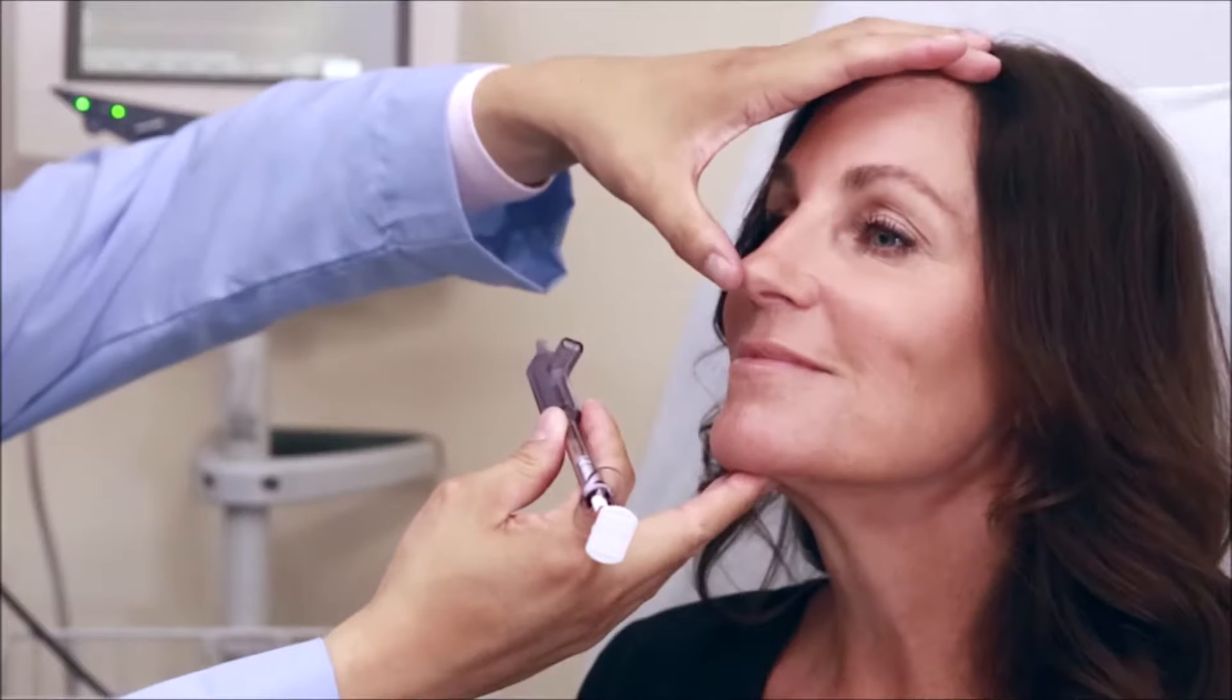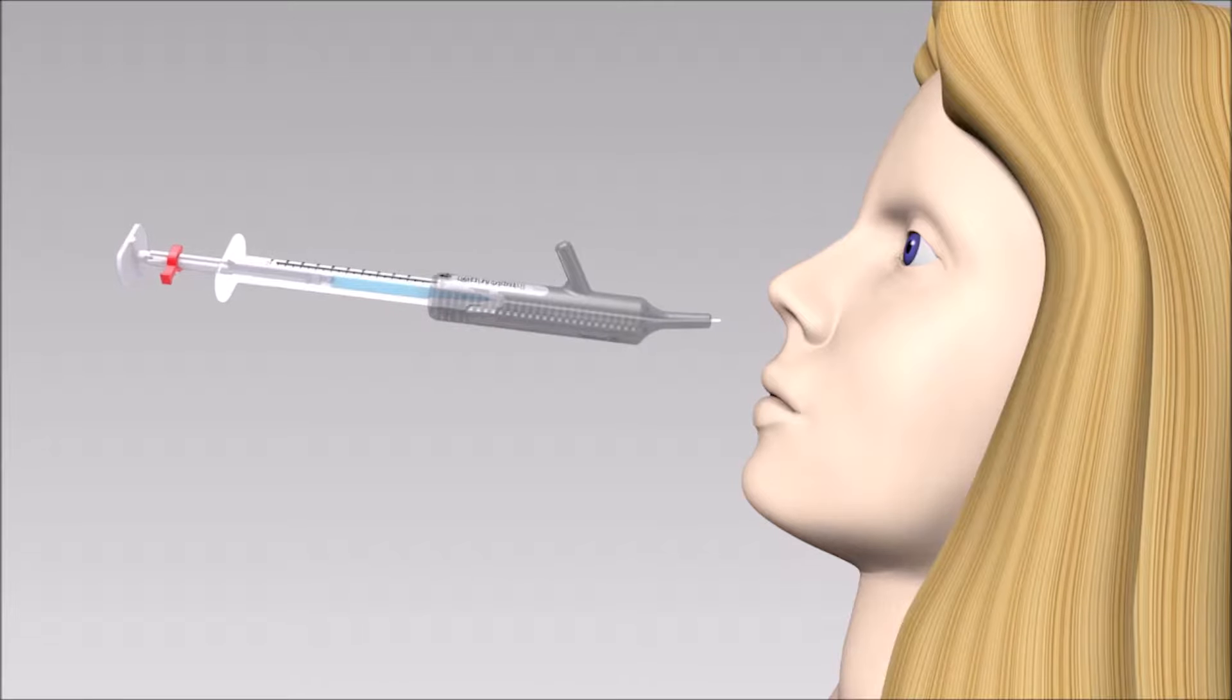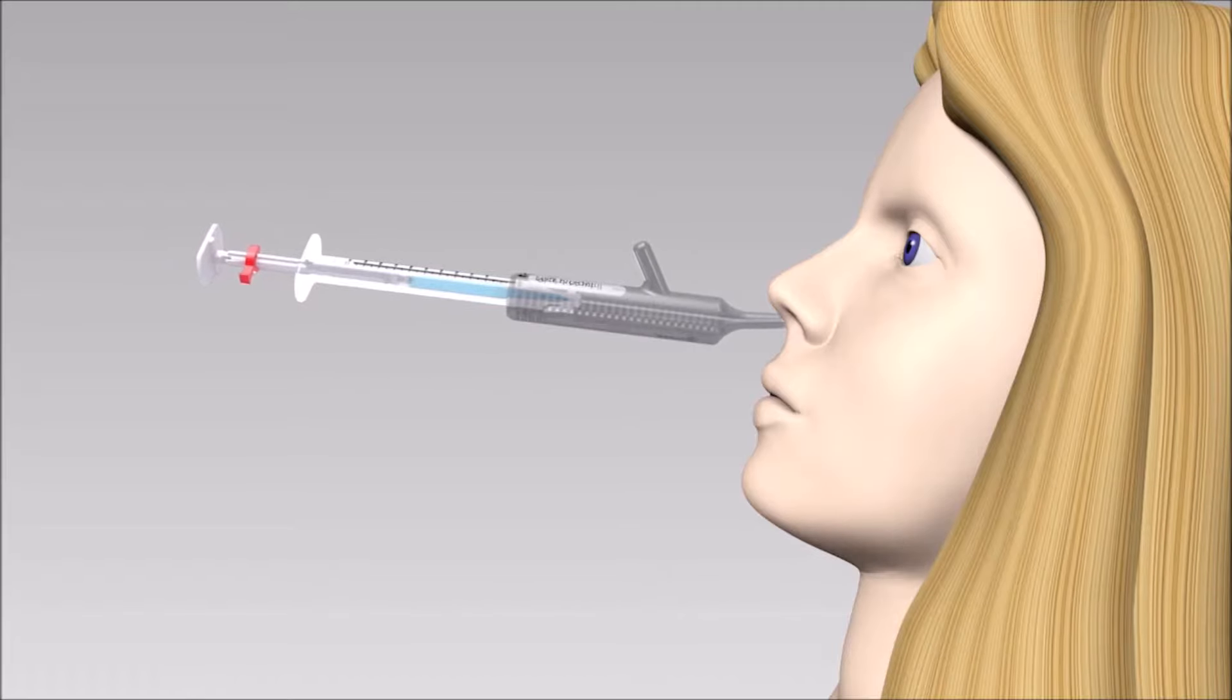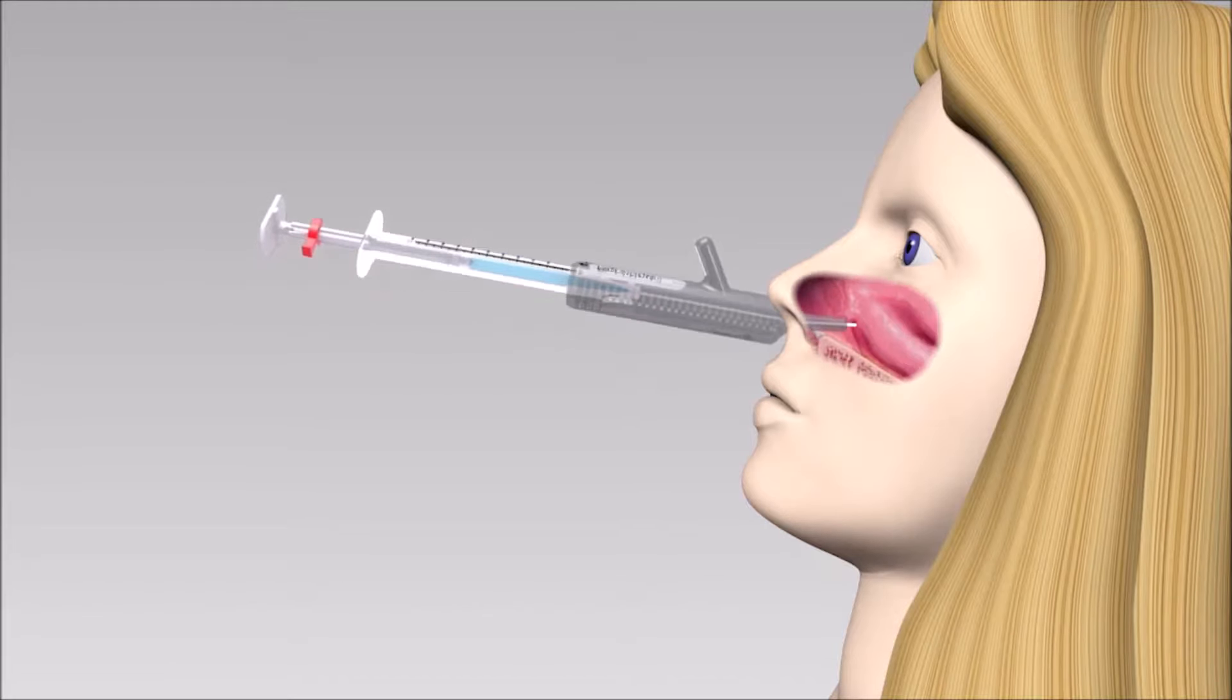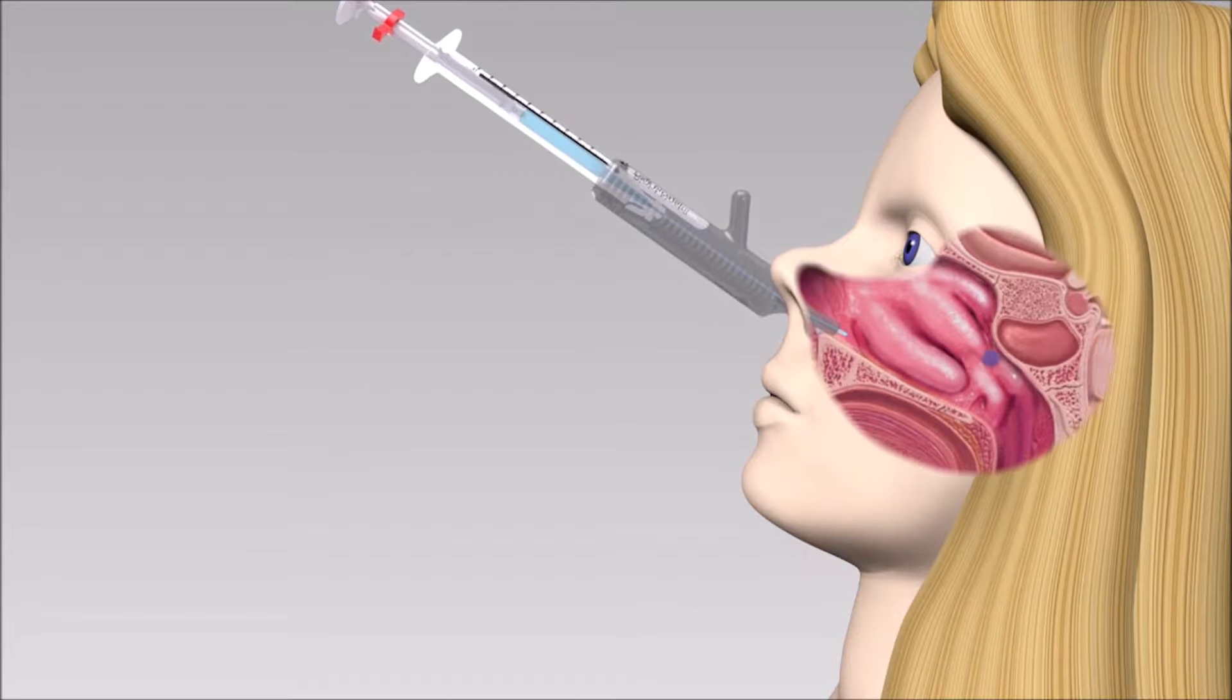Using your dominant hand, insert the short tip of the TX360 device into the nasal entrance of the patient as far as you can by pointing slightly superior and directing posteriorly as shown here.